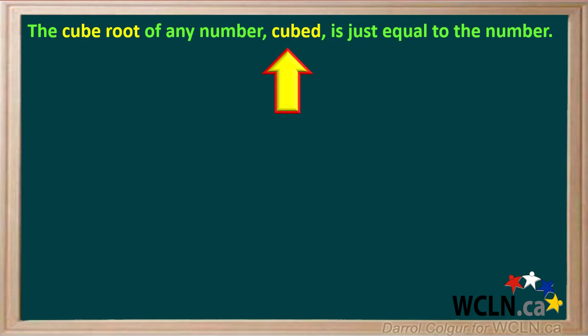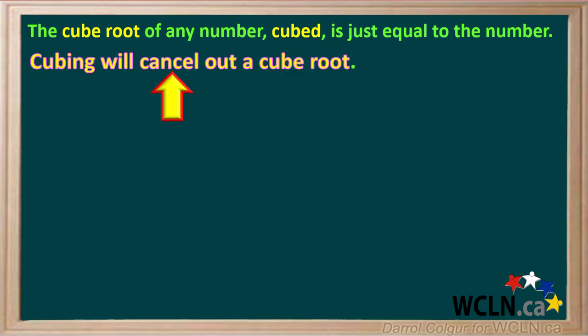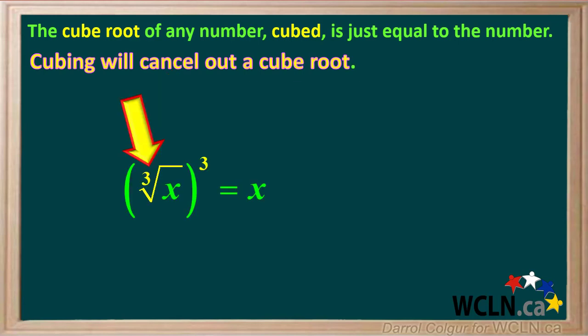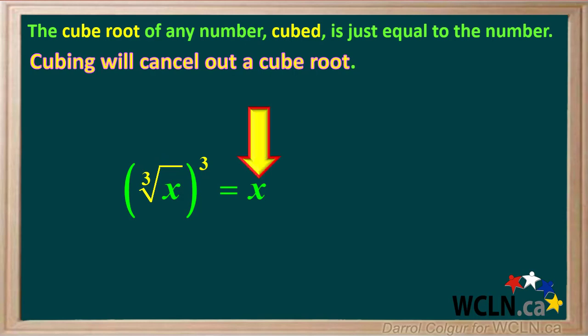It's also handy to know that the cube root of any number, cubed, is just equal to the number. We don't have to specify a positive number here because we can take the cube root of a negative number. So cubing will cancel out a cube root — they are just opposites of each other. The equation shows that the cube root of x, raised to the third power, or cubed, is just equal to x.